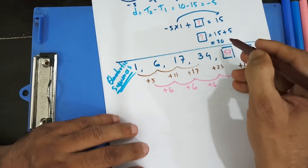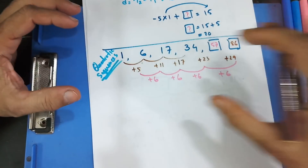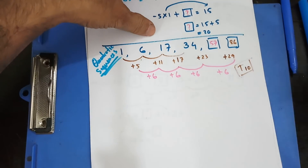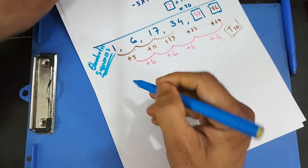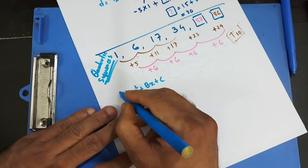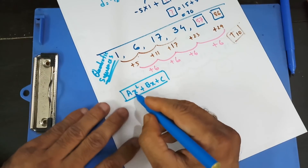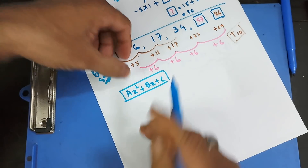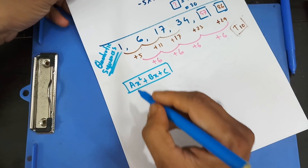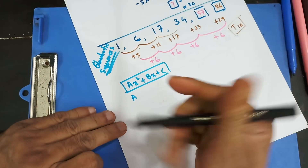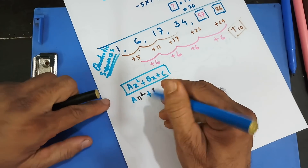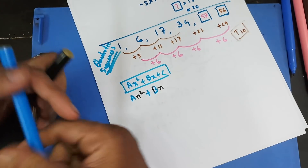Now how are you going to find out the 10th term? We need a formula that gives any term of the sequence. Since this is a quadratic sequence, remember the quadratic formula: ax² + bx + c. That's our quadratic expression. We're going to replace x with n, because n is used for the term number. So it becomes: an² + bn + c.